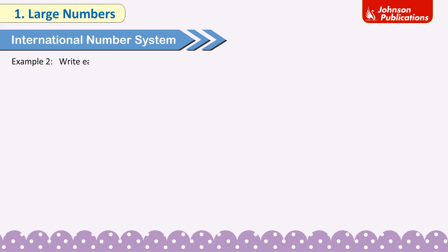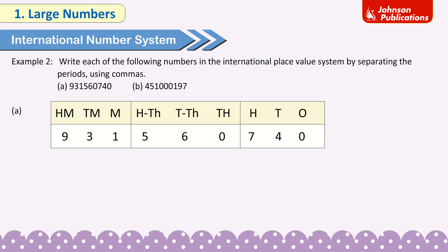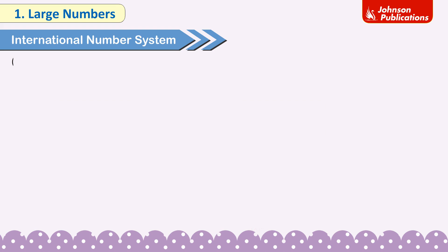Example 2: Write the following numbers in the international place value system by separating periods using commas. A. 931,560,740 — placing digits: HM=9, TM=3, M=1, HTH=5, TTH=6, TH=0, H=7, T=4, O=0. Number using commas: 931,560,740. Number name: nine hundred thirty-one million five hundred sixty thousand seven hundred forty.